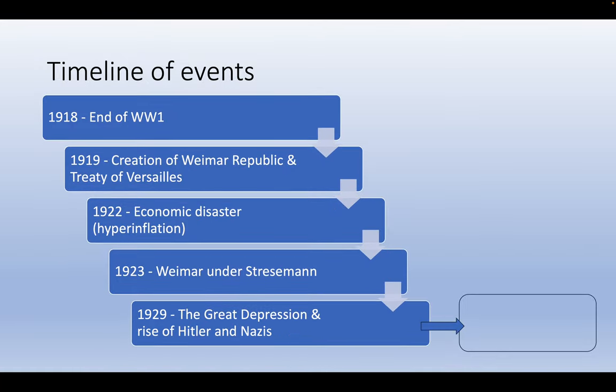Here's the timeline of events. In 1918, World War I ended. In 1919, the Weimar Republic was created and the Treaty of Versailles was signed. In 1922, economic disaster caused hyperinflation. 1923 saw the Weimar under Stresemann. 1929 brought the Great Depression and the rise of Hitler and the Nazis. Hitler became Chancellor in 1933, Fuhrer in 1934, and World War II started in 1939. By the end of this video, it should all make sense.